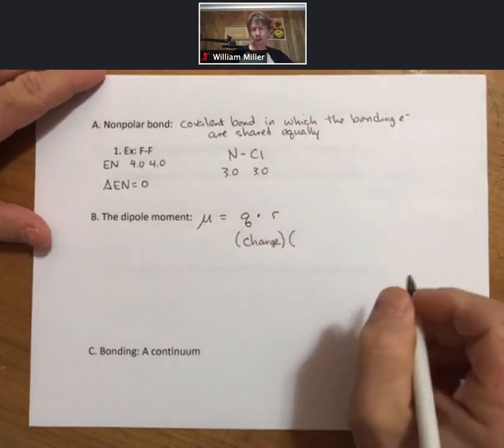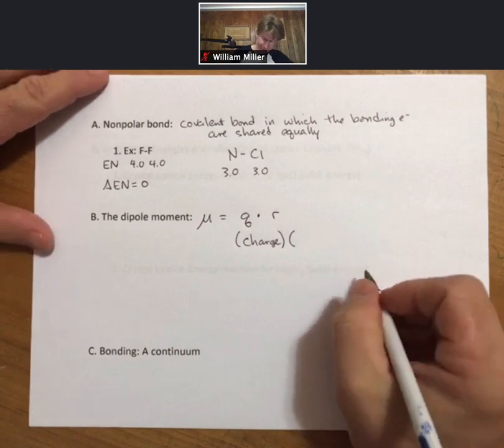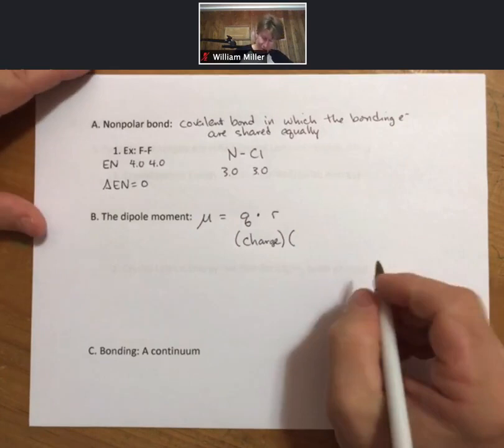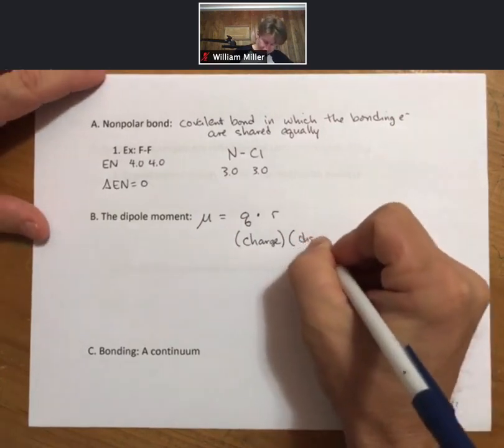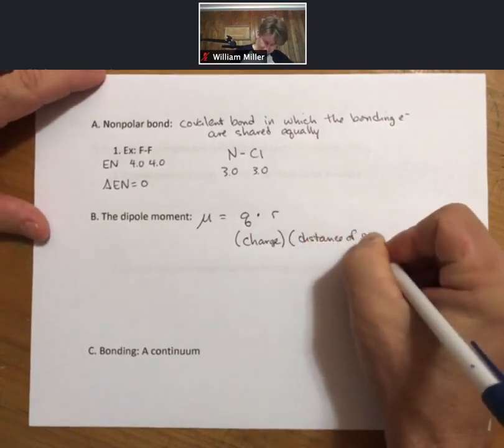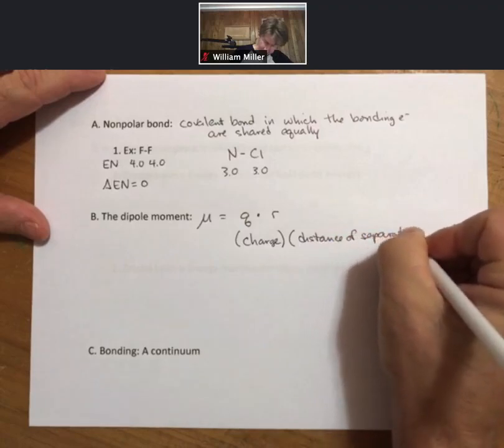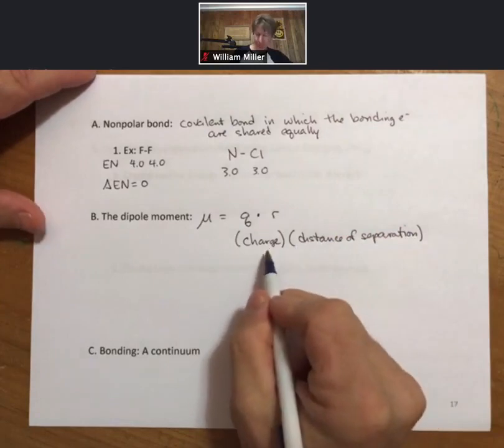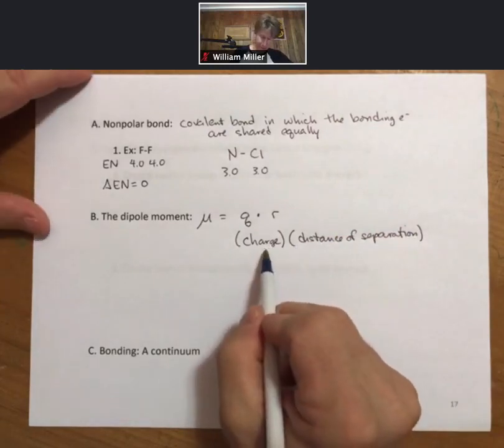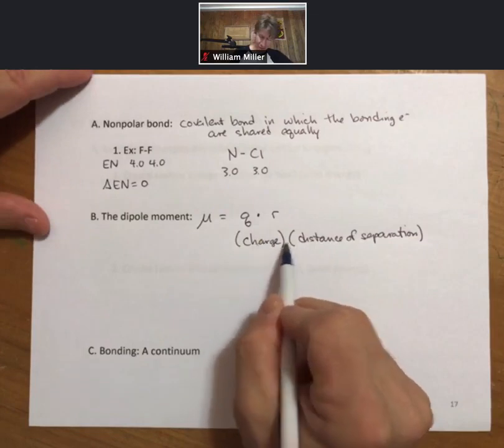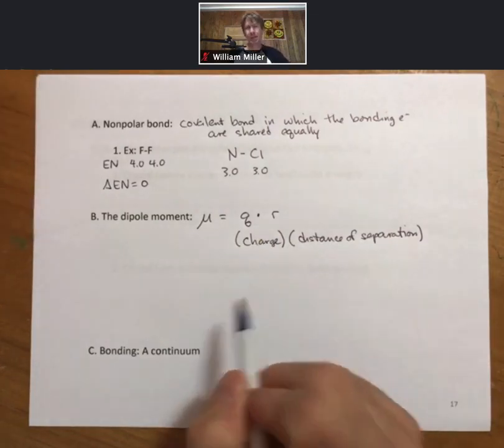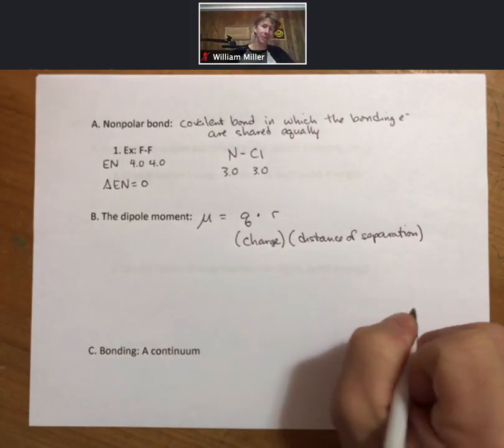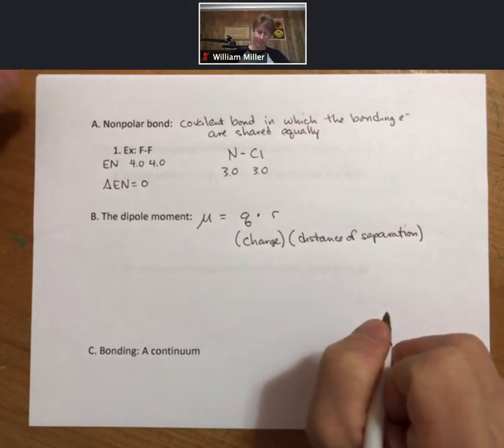And r is the distance of separation for the charge. If you multiply those two together, you get the dipole moment—the charge times the distance. The difference in electronegativity is a more qualitative or semi-quantitative idea about polar bonds.